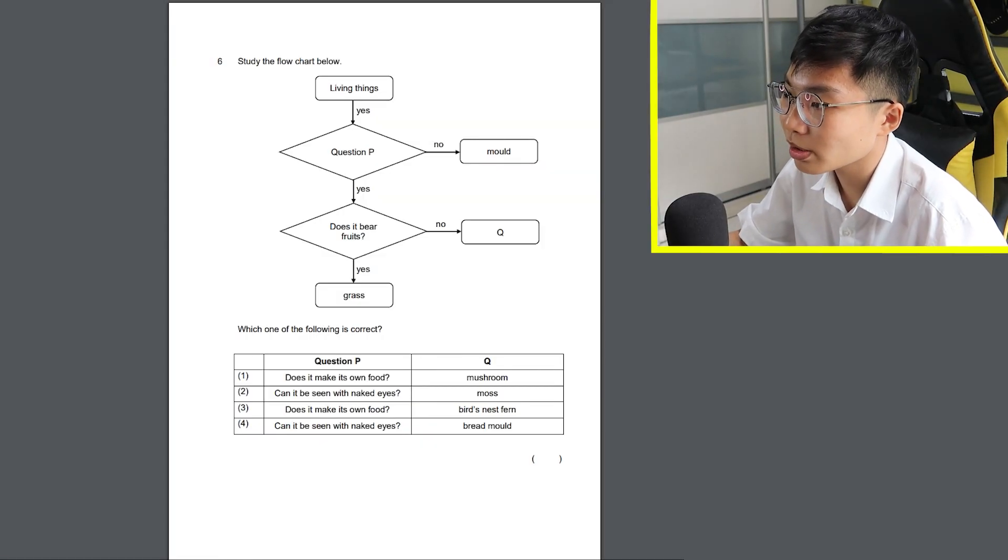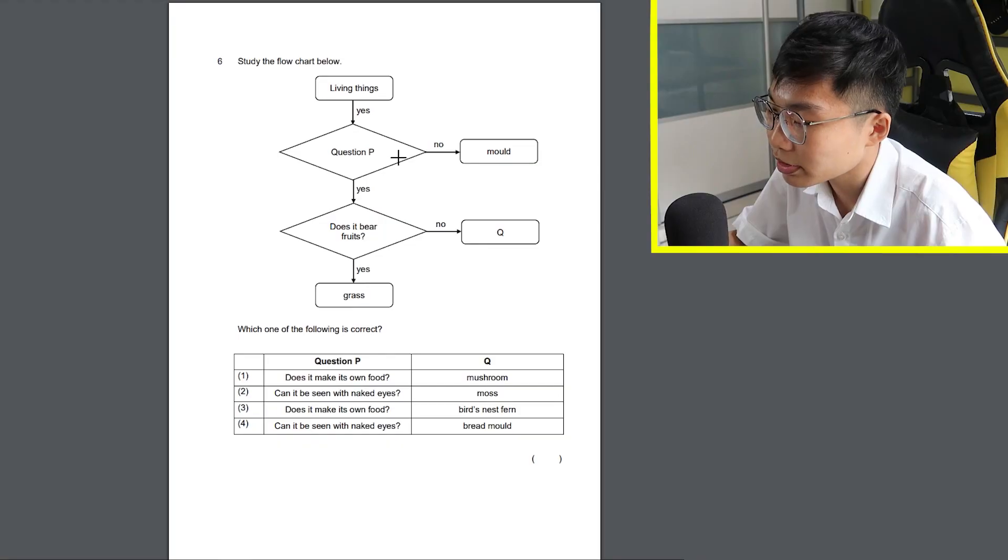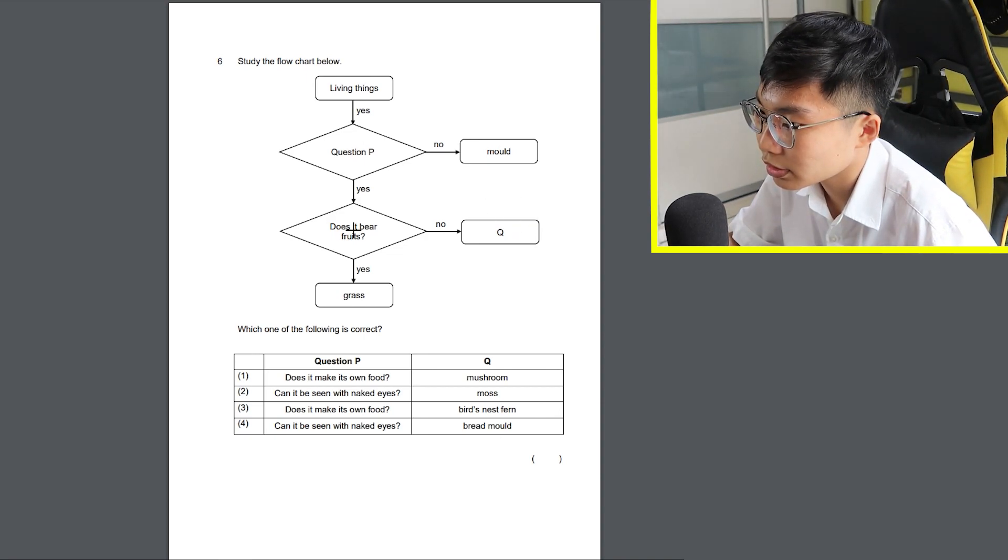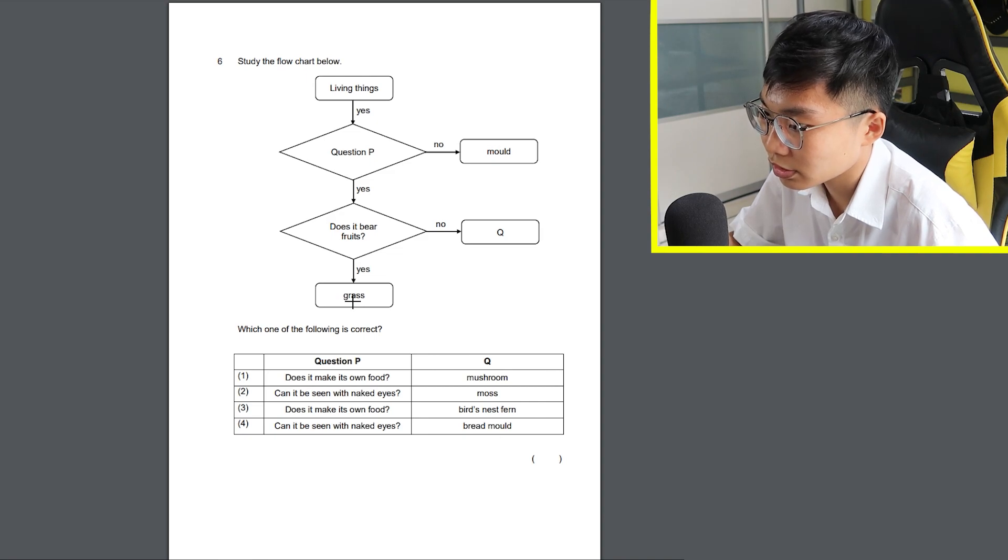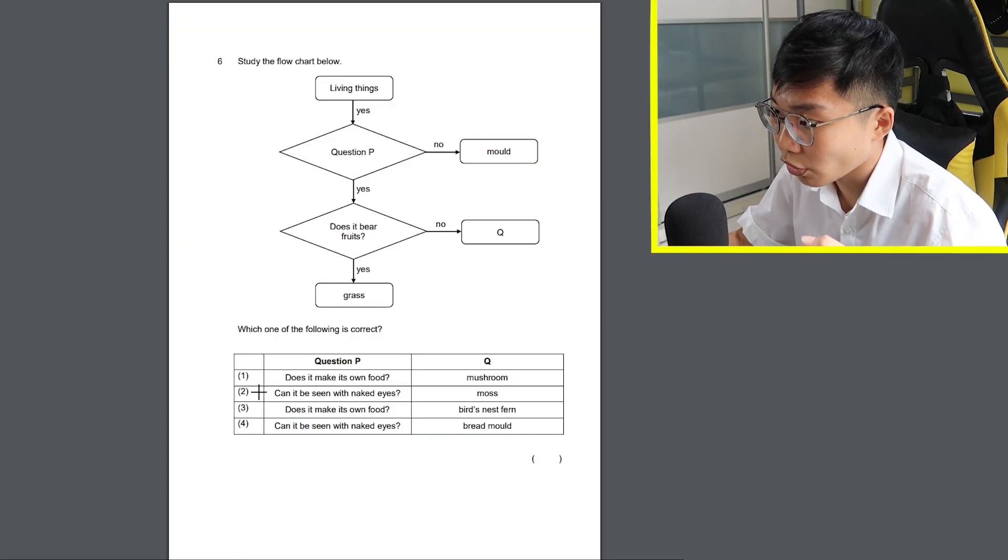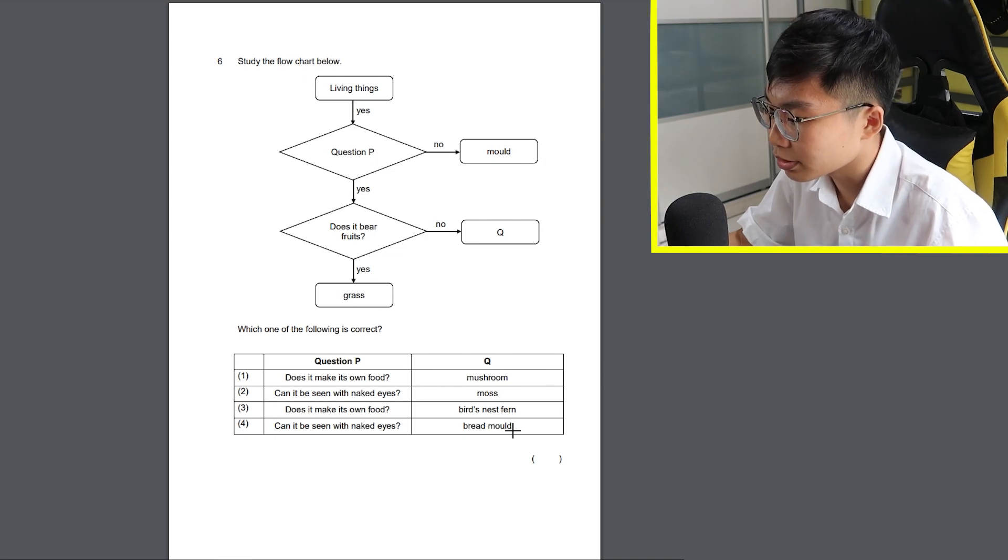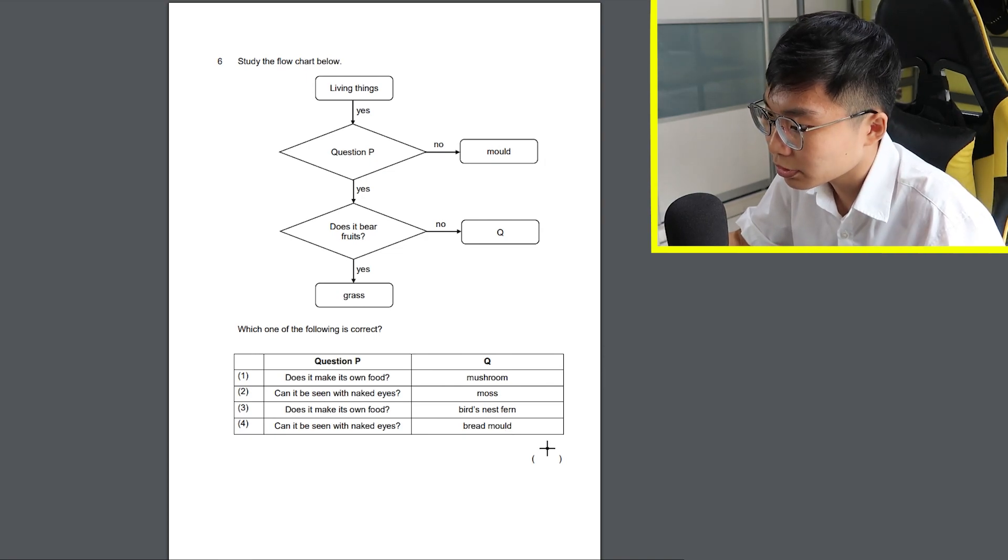Question 6. Study the flow chart below. Wow, it's been a while since I've seen a flow chart. Okay, so basically, what is P and Q? Living things, yes. Question P, yes. Does it bear fruit? Yes. Grass. Oh, grass bare fruits? Oh my god, I didn't even know that. Okay, so it's either 2 or 4 because you can see more with your naked eyes. Then Q will be Bradmoe, I assume. Yeah, I'm just gonna put 4.